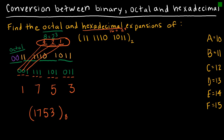Now if we look at hexadecimal expansions, which is base 16, it's going to be very similar. But hexadecimal is 2 to the 4th, so I'm going to have four places instead of three: 2 to the 0 (1), 2 to the 1st (2), 2 squared (4), and 2 to the 3rd (8). So instead of grouping in threes, I'm going to group them in groups of four, which is nice because they're already in groups of four.